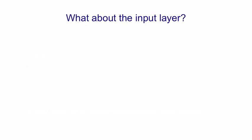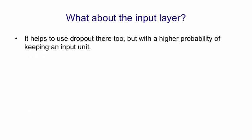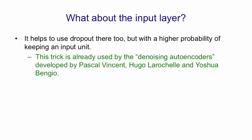What about the input layer? Well, we can use the same trick there, too. We use dropout on the inputs, but we use a higher probability of keeping an input. This trick's already in use in a system called denoising autoencoders, developed by Pascal Vincent, Hugo Larochelle, and Yoshua Bengio at the University of Montreal. And it works very well.